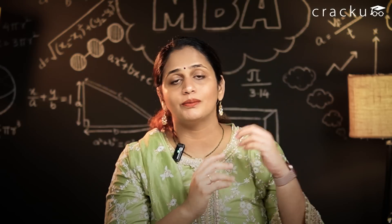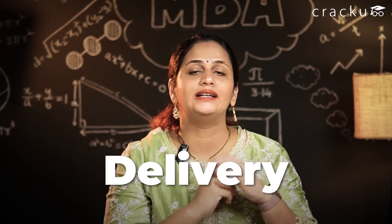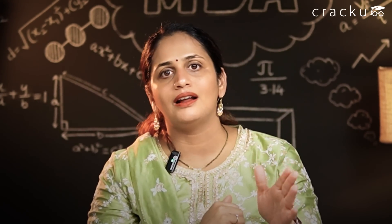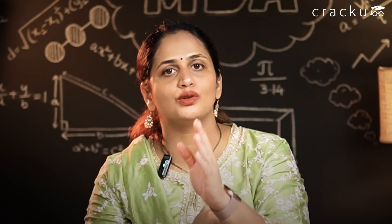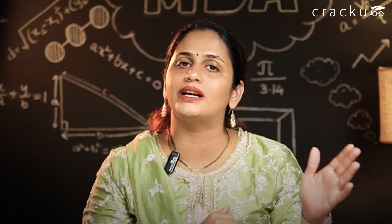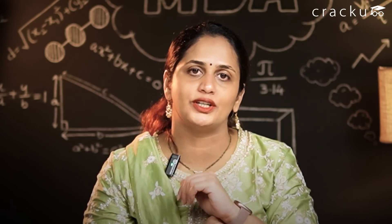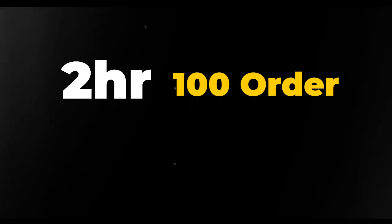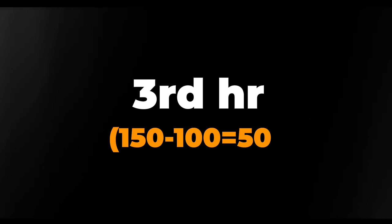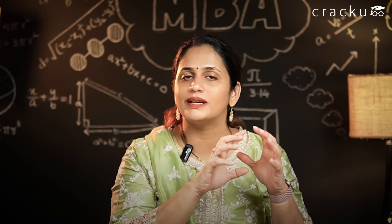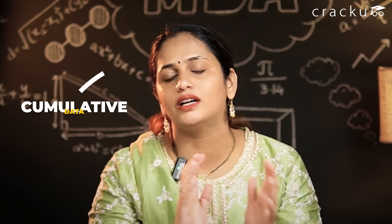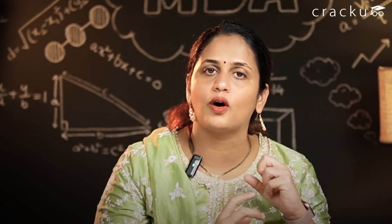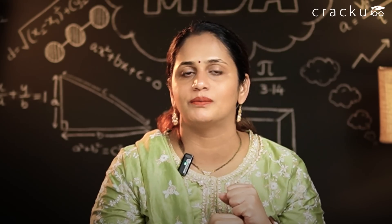This came recently in CAT where delivery information was given — at the end of hour one, so many orders were delivered; at the end of hour two, so many orders were delivered. The cumulative number was mentioned. Whenever cumulative data is given, you convert it to range-wise data. For example, if 100 orders were delivered by the end of two hours and 150 by the end of three hours, then 50 orders were delivered in the third hour. This is converting cumulative data to range-wise data.